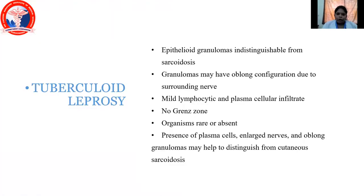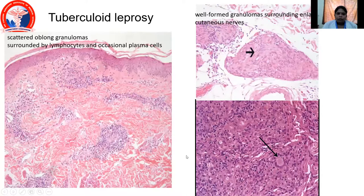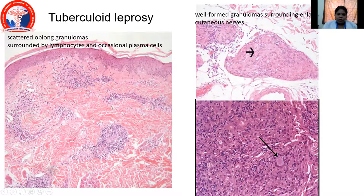Coming to tuberculoid leprosy, the epithelioid granulomas are indistinguishable from sarcoidosis. Granulomas may have an oblong configuration due to surrounding nerves. There will be a mild lymphocytic and plasma cellular infiltrate, known as the grenz zone. Organisms are rare or virtually absent. Presence of plasma cells, enlarged nerves, and oblong granulomas may help distinguish it from cutaneous sarcoidosis. This is a microscopic picture of tuberculoid leprosy where you have scattered oblong granulomas surrounded by lymphocytes and occasional plasma cells. This is a granuloma of oblong type surrounded by lymphocytes and plasma cells, and this is a picture of a well-formed granuloma surrounding the enlarged cutaneous nerve, with nice giant cells.